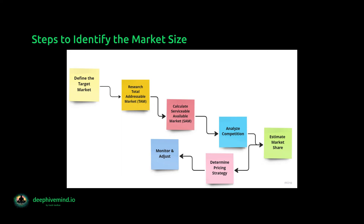Fourth, analyze competition — identify the competitors in the market and evaluate their market share, pricing strategy, and other relevant factors that may affect the market size. Fifth, estimate the market share — determine the percentage of the market that the company can capture, calculated based on the SAM and the competition in the market. Sixth, determine the pricing strategy — set a pricing strategy that is competitive and profitable based on the market demand, competition, and product differentiation.